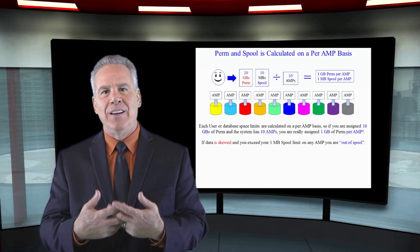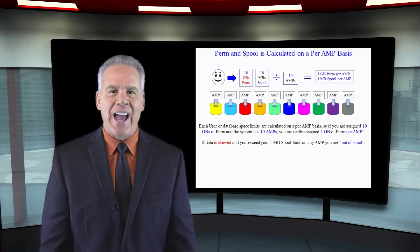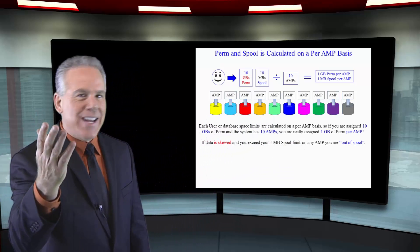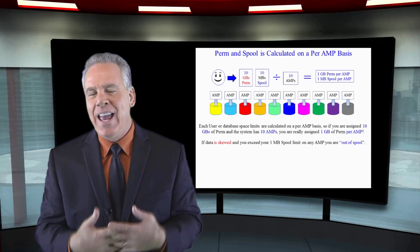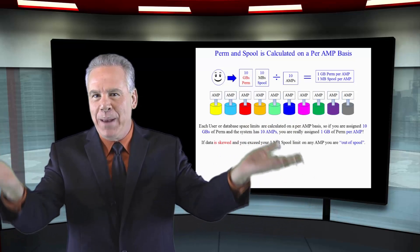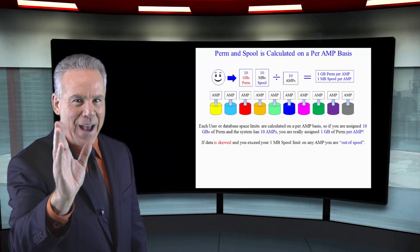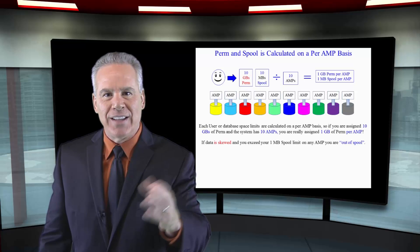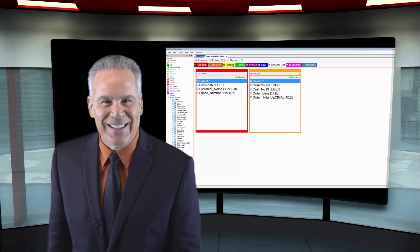Some of you are running out of spool because you're joining two tables together and saying you just didn't have enough spool — when in fact you did. Here's the way spool works: if you get 10 gigabytes of spool and your system has 10 AMPs, all space is allocated on a per-AMP basis. So 10 gigabytes of spool on a 10-AMP system gives you one gigabyte per AMP. If you go over your one gigabyte on any AMP, it's going to abort the query and say you're out of spool.